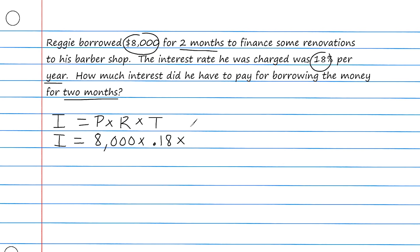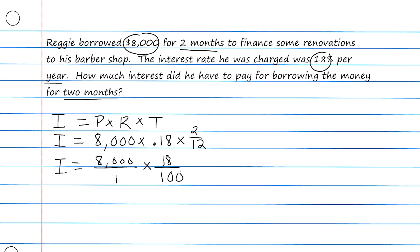How do we write two months in terms of years? A full year has 12 months, so the time is 2 out of 12 months. Since we have a whole number, a decimal, and a fraction, the easiest approach is to state all three values as fractions: 8,000 over 1, times 18 over 100, times 2 twelfths — which reduces to one sixth of a year.